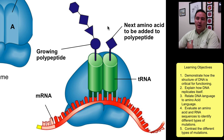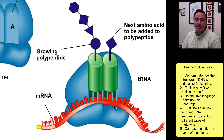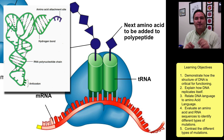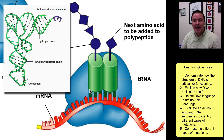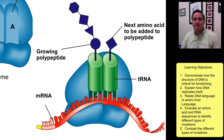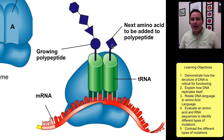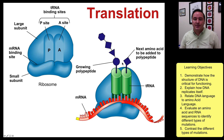Putting it all together: the ribosome is in blue, and the messenger RNA made through transcription runs through it. The two docking sites hold transfer RNAs — RNA molecules that fold up on themselves with two important parts. On one end, they have an amino acid attachment site, and on the other end, they have an anticodon, which has the corresponding bases to attach to the codons on the mRNA. In the P-site, you have the growing polypeptide, and in the A-site, you have the next amino acid to be added.